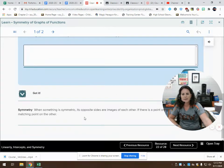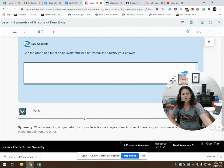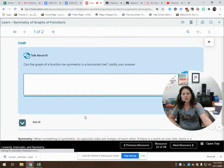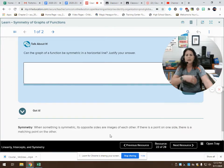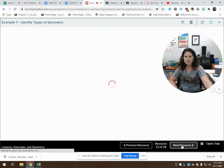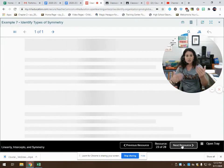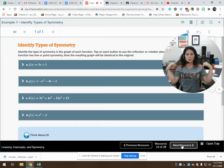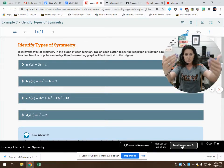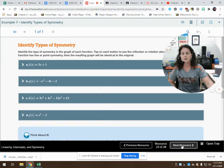Just a little study tip. When something is symmetric, its opposite sides are images of each other. If there is a point on one side, there is a matching point on the other side. Makes sense. When you look at yourself in the mirror, you are a reflection of yourself. There is symmetry.